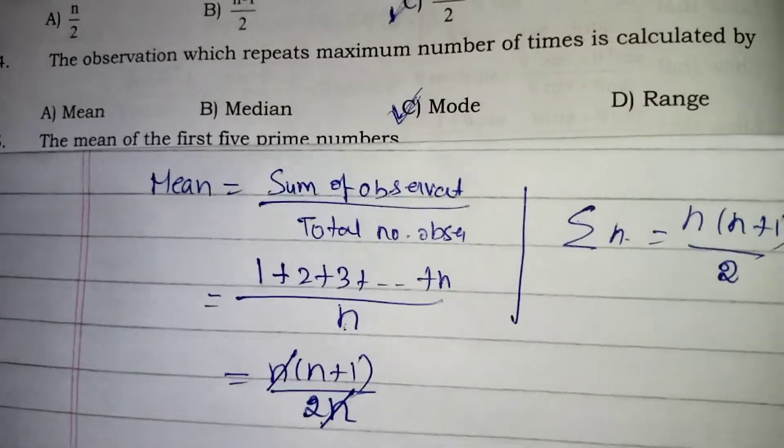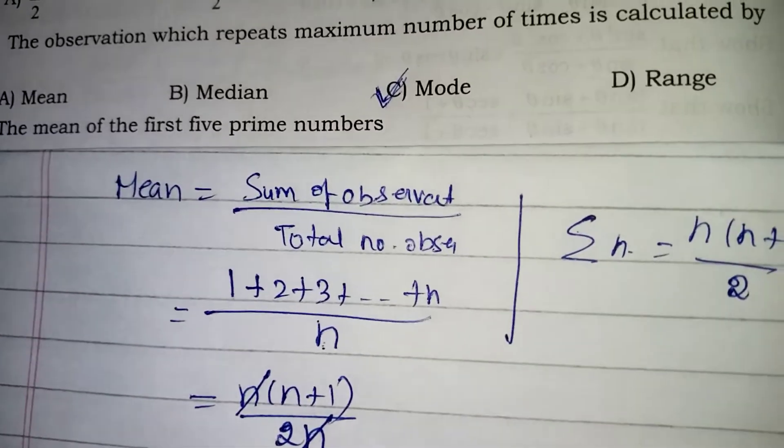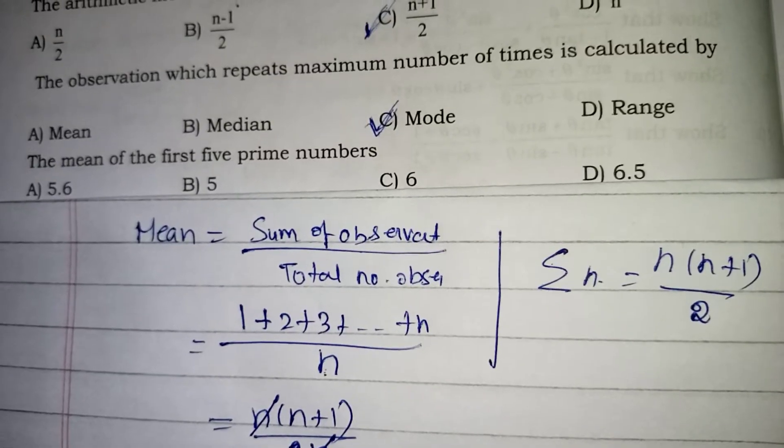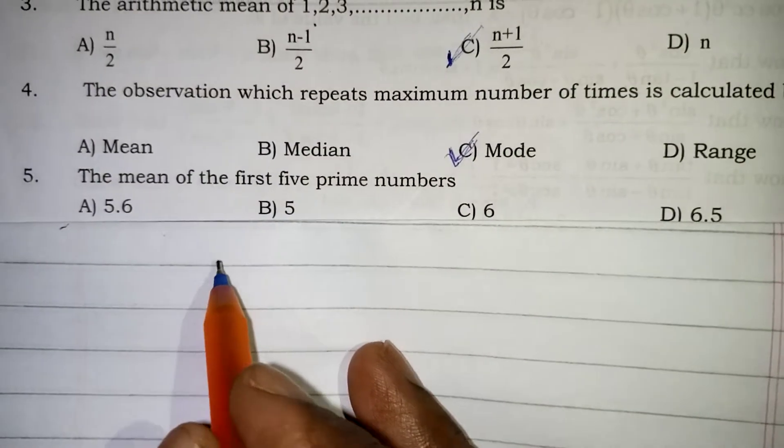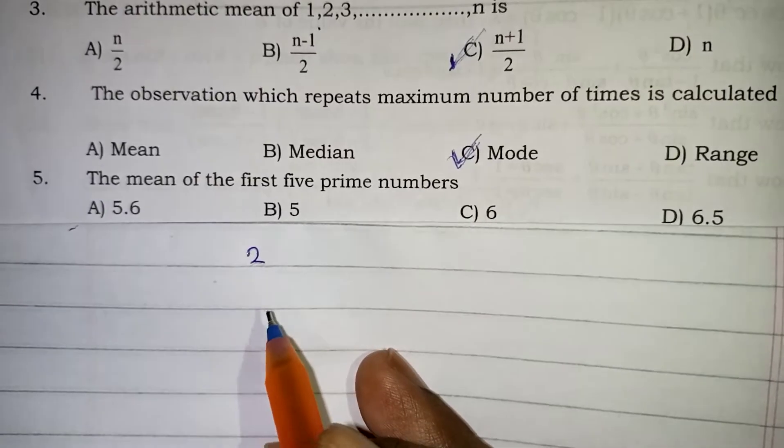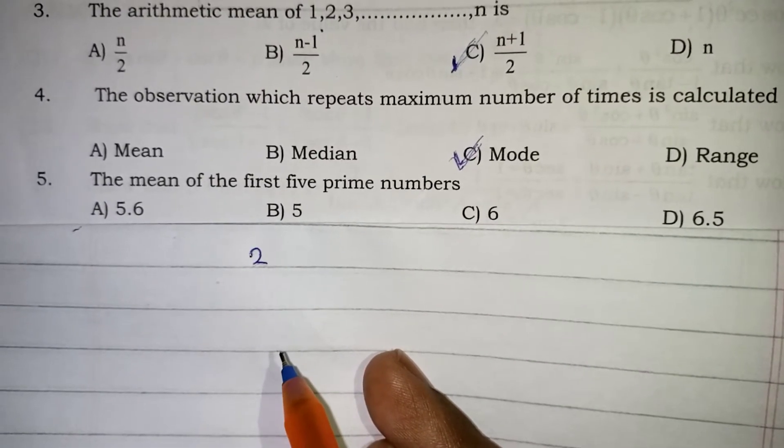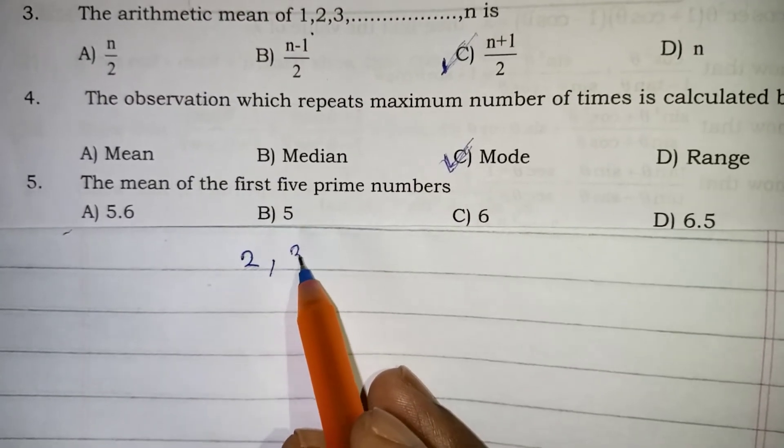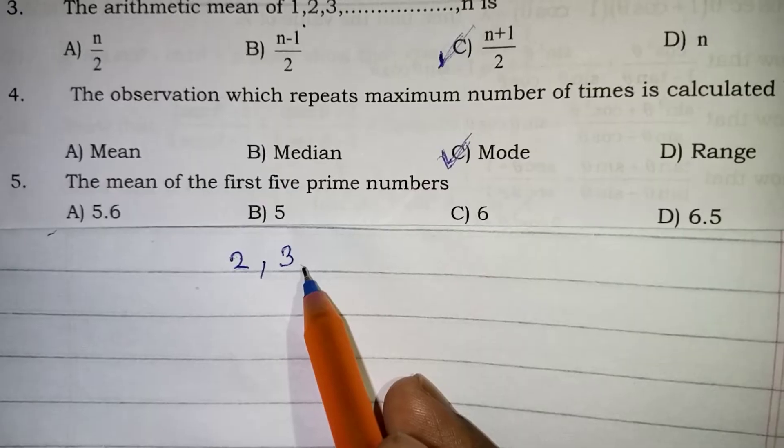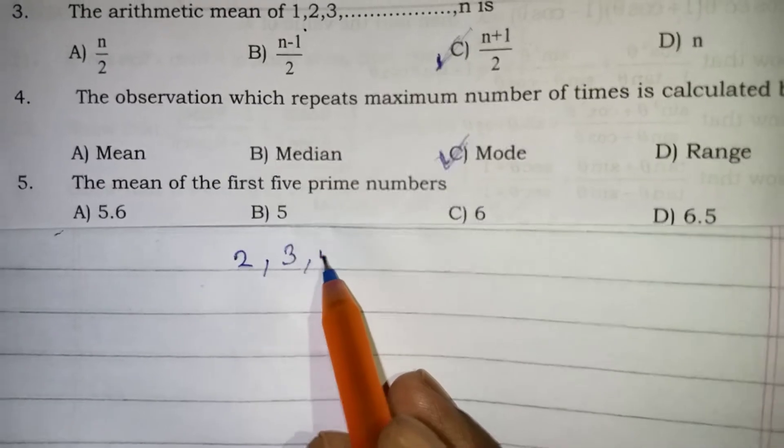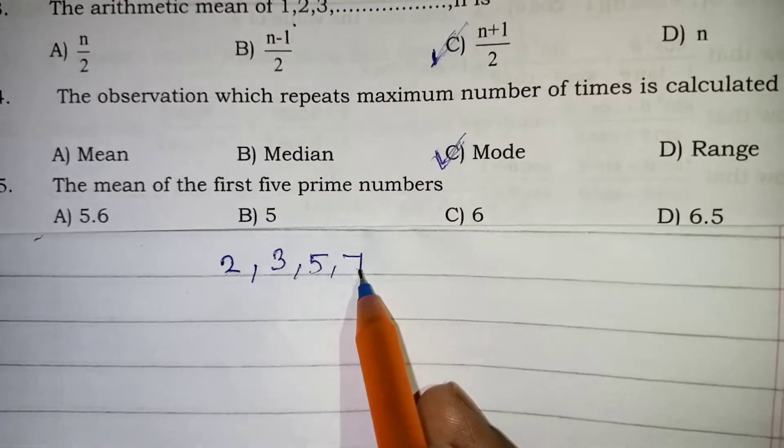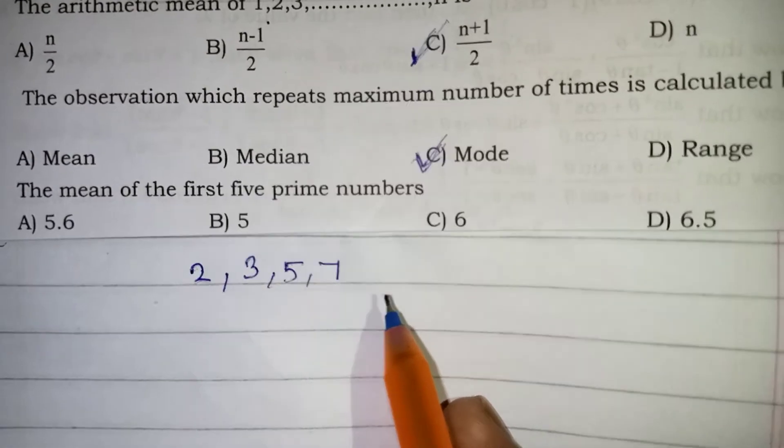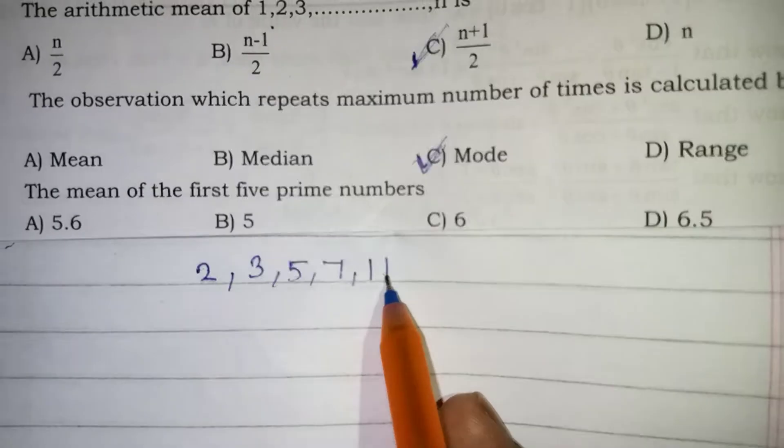Now the next question. Find the mean of first 5 prime numbers. So we have to take first 5 prime numbers. We have to find the mean for that. So the first 5 prime numbers are, 2 is a prime number. 1 is neither prime nor composite. It is not a prime number, not a composite number. We should not take 1. So 2 is a prime, 3 is a prime. 4 is not a prime number because 4 will come under 2 table. Now 5 is a prime number. 7 is a prime number. 8 and 9, 10 and all is not a prime number. That will come under some other tables. So the next is 11 is the prime number.